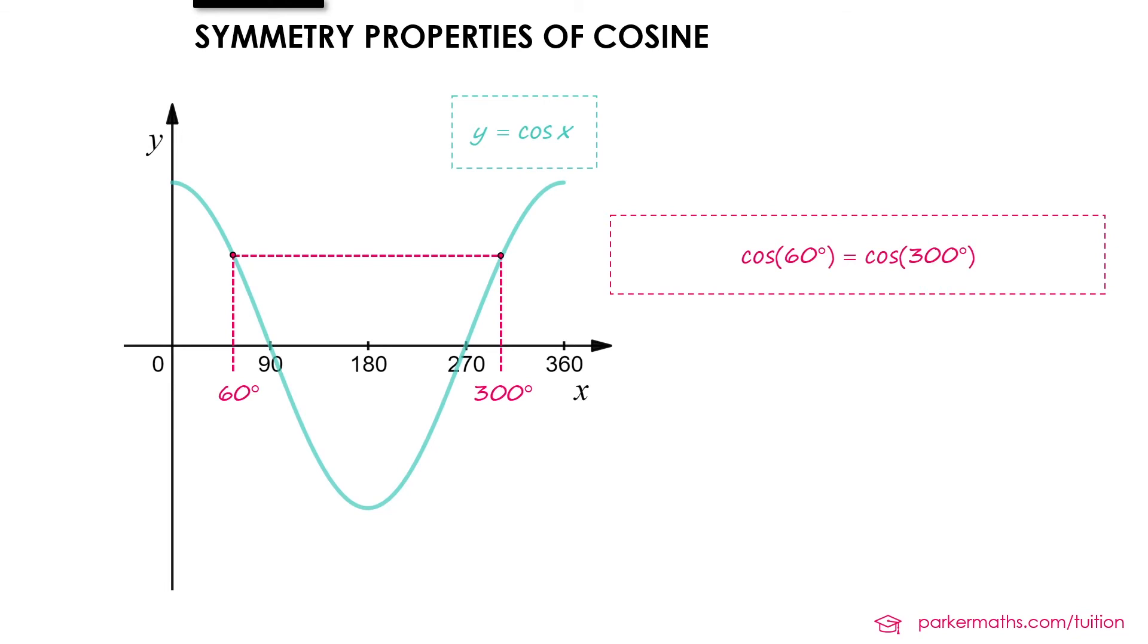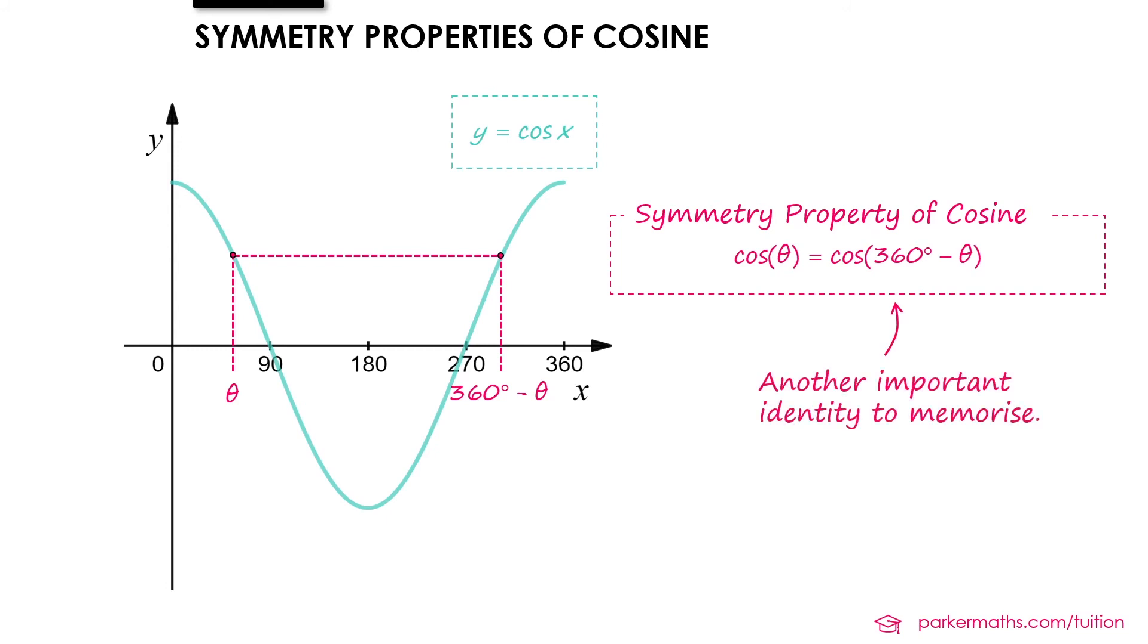Once again though, you could get that from the unit circle if you draw a diagram of cos 60 and cos 300. More generally though, if we have a value of theta to get the other value of theta which is symmetrical with that, we would start from 360 and we would subtract theta. And so one of the symmetry properties for cosine is cos theta equals cos of 360 minus theta. And once again, this is an important identity to memorize as it's something that's going to come up a lot throughout the course.